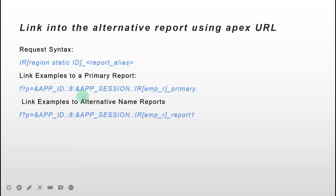I'll give you two examples. The first is linked to the primary report. Here is the URL of APEX — this is the application ID, page ID, section — and here is very important: you need to put the request syntax here.